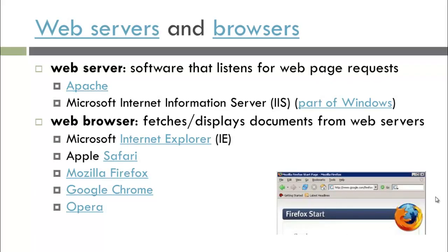In order to access information on the World Wide Web, we need web servers and a web browser. A web server is software that listens for web page requests, usually from a browser, and sends that information back. Two common ones are Apache and Microsoft IIS. A web browser fetches information from the web server and displays it. Popular ones include Microsoft's Internet Explorer, Apple's Safari, Mozilla's Firefox, Google's Chrome, and Opera.